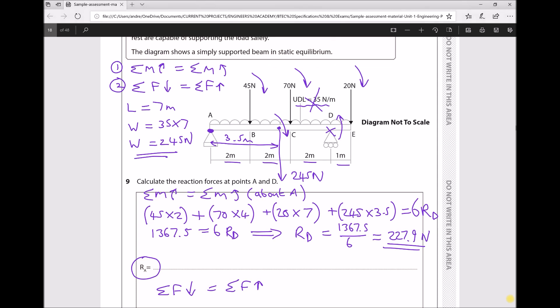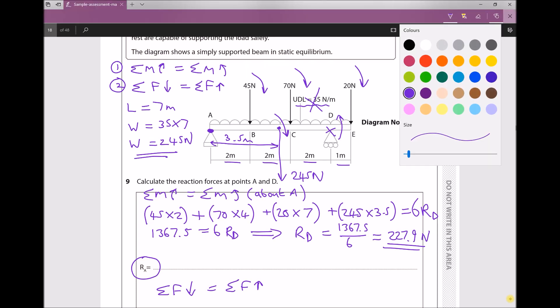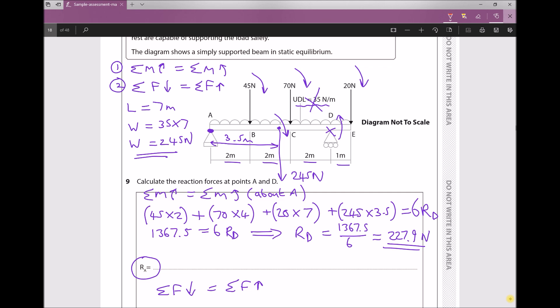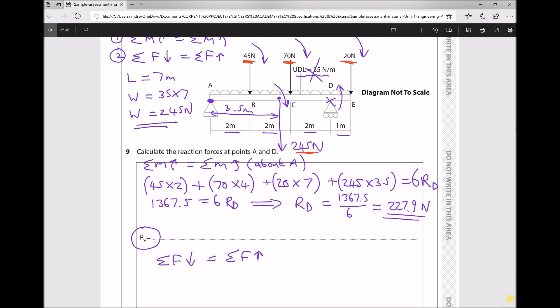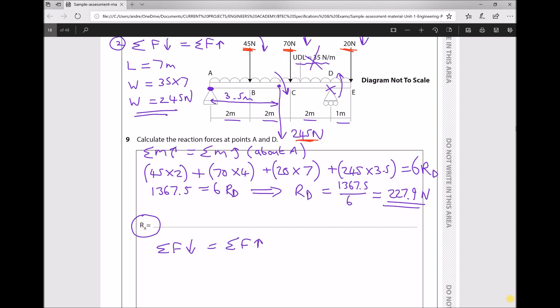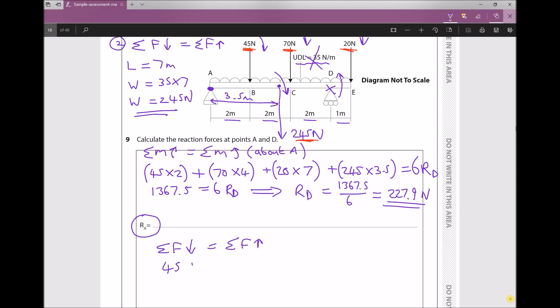we can see that the following forces are acting downwards. We have 45 newtons acting downwards, we have 70 newtons acting downwards, we have 20 newtons acting downwards, but we also have 245 newtons acting downwards. So let's add those: 45 + 70 + 20 + 245 acting down.